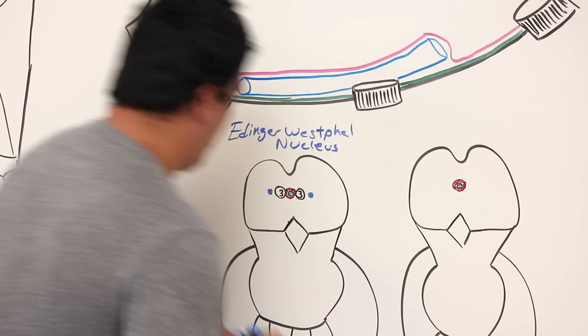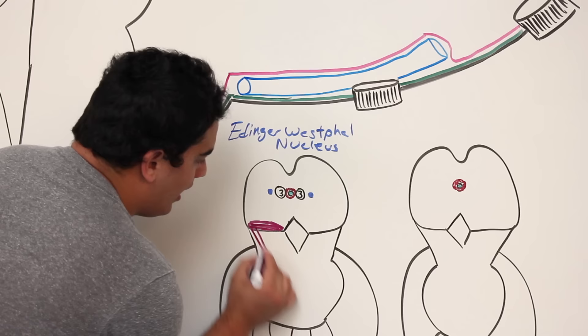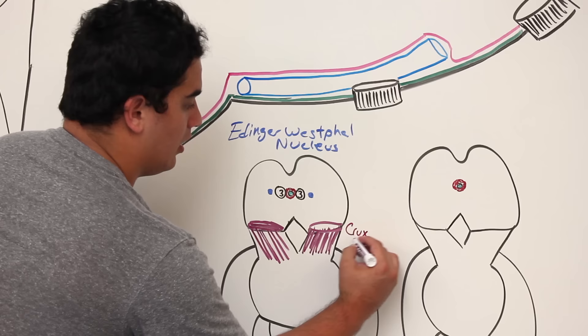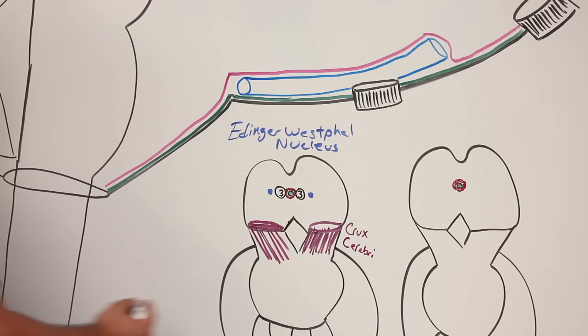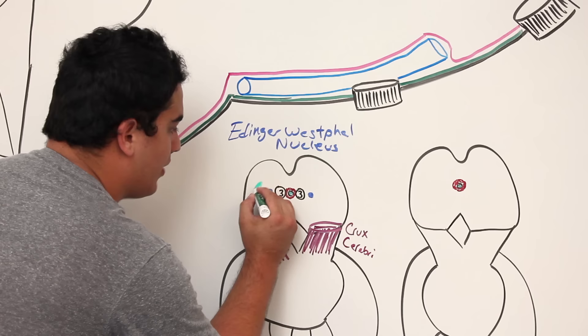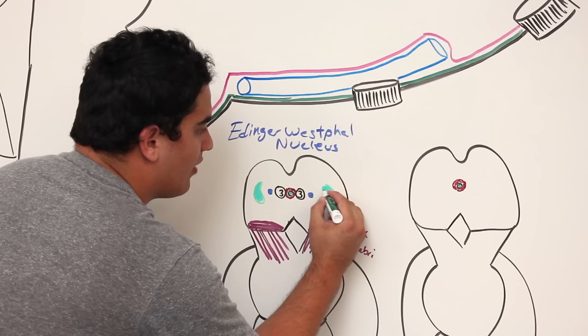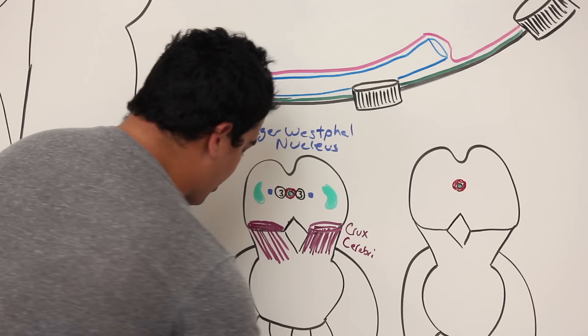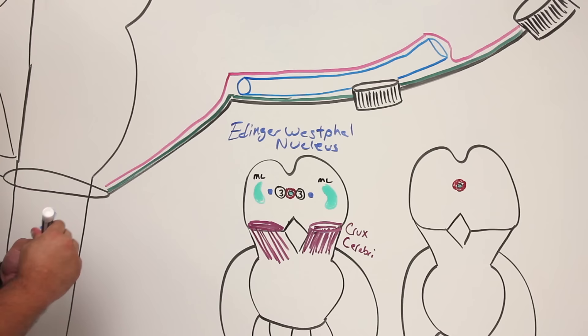Now for some surrounding neuroanatomy: anterior to the third nerve nucleus is a structure consisting of descending corticospinal motor fibers called the crux cerebri. On the sides of the parasympathetic nucleus are green myelinated axons carrying sensory information — proprioception, touch, fine discriminative touch, and pressure. This structure is called the medial lemniscus, present on both sides.